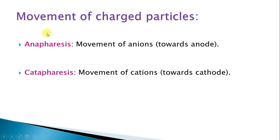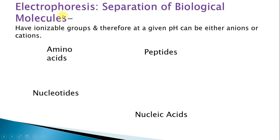In electrophoresis, the movement of charged particles can be anaphoresis — if the movement is of anions, which are negatively charged particles, they will move towards the anode, which is the positive electrode. Cataphoresis is the movement of cations, which are positive ions; they move towards the negatively charged electrode, which is the cathode.